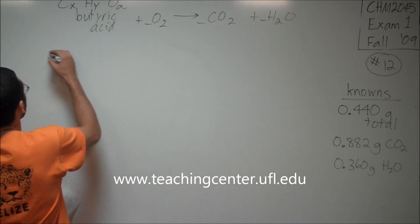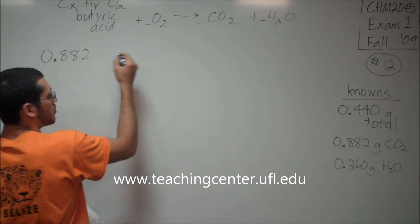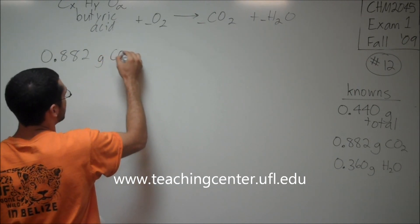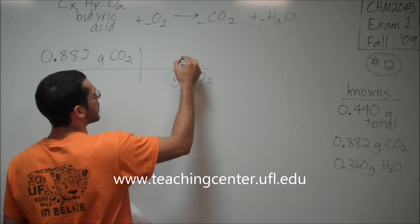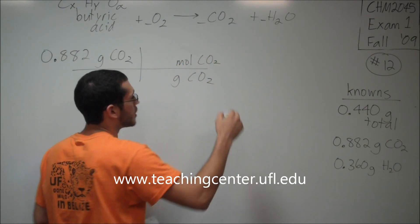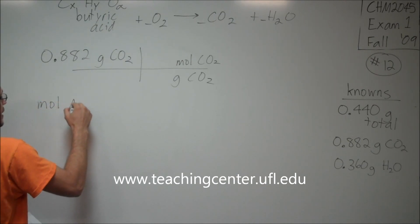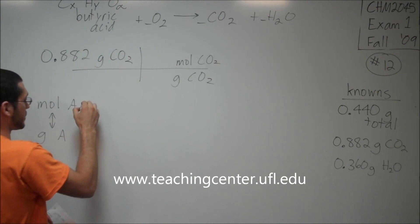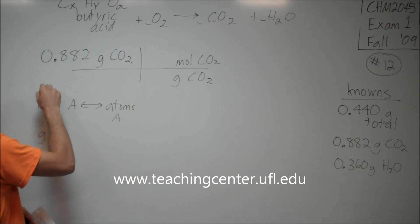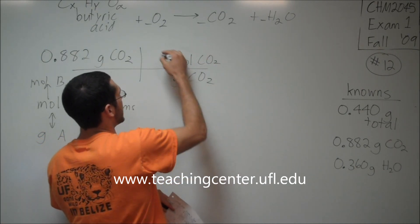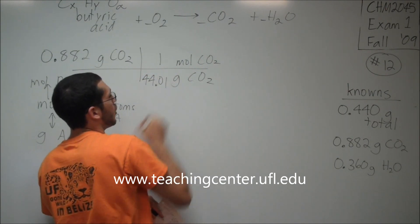Start out with our CO2. Start with what you're given. 0.882 grams CO2. Now I need to convert. I need to find out how much carbon this is. So I need to cancel grams CO2 with mole CO2. Because according to Mole World, if I'm at grams of something, the only place I can go is to moles of something. In one mole of CO2, I have 44.01 grams CO2.